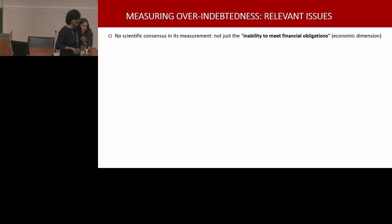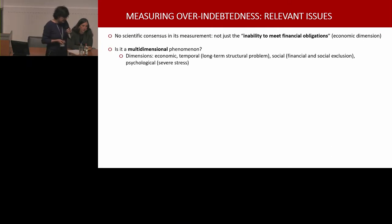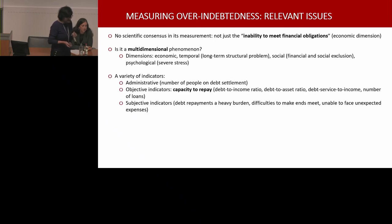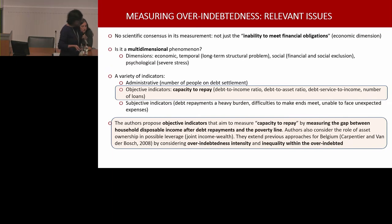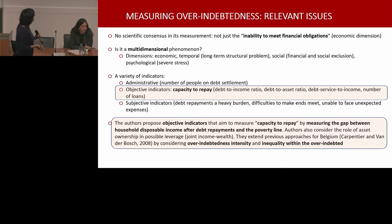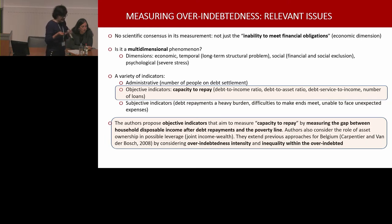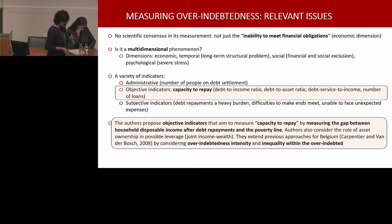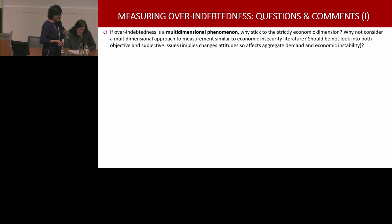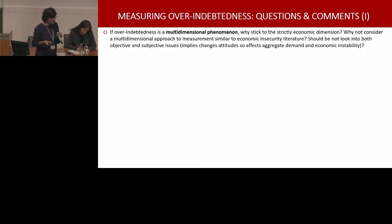They focus on the economic dimension, but they also underline it's a multidimensional phenomenon. Among a variety of indicators, they focus on the capacity to repay — so it's an objective indicator. What they underline is that measuring the gap between household disposable income after debt repayments and the poverty line is relevant — it's not the same to have a small gap compared to a large gap. They go forward from previous analysis for Belgium in the idea that the intensity of this over-indebtedness is relevant, and the inequality between the over-indebted could also be looked at. I think the paper could take advantage of this idea of multidimensional phenomenon, because it focuses on the economic dimension only.